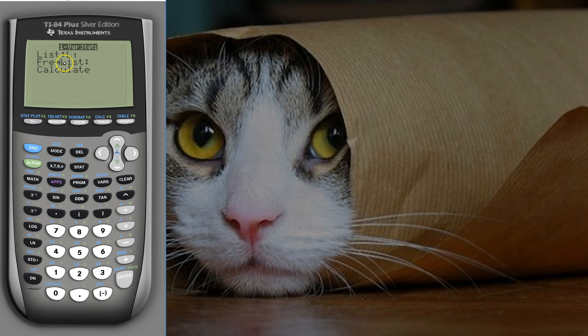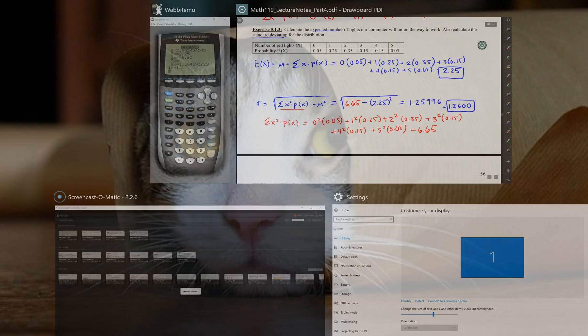If you have the stats wizard, tell it to use the values in L2 as your frequency list. Press second and then two to make L2 appear on screen. Then calculate. And there you see I screwed up—my n is 1.1 and not 1, so I need to go back and fix one of the values.